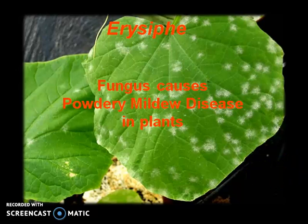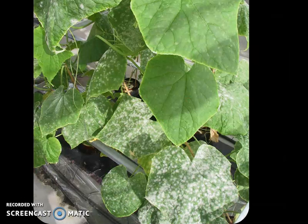Today's topic is Erysiphe. Erysiphe is a fungus which causes powdery mildew disease in plants. The infection appears like white powdery patches on the surface of the leaf, which further matures and covers the whole leaf.